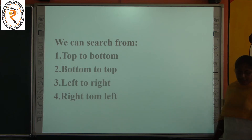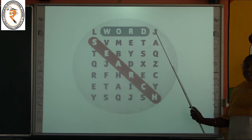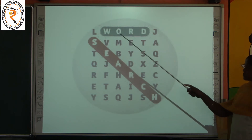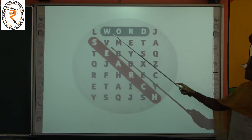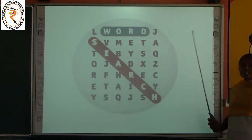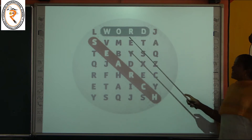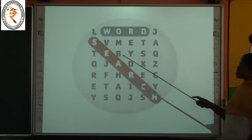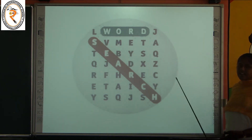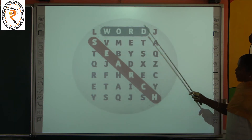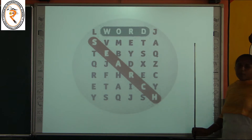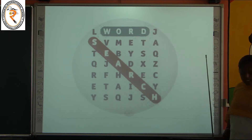How can we find a word? We will search for the word from top to bottom, bottom to top, left to right, and right to left. If the word exists in top to bottom or bottom to top, we will search from left to right, then from right to left. By searching in all directions we can easily find where the word is present. These are the options for searching a word in a word grid.